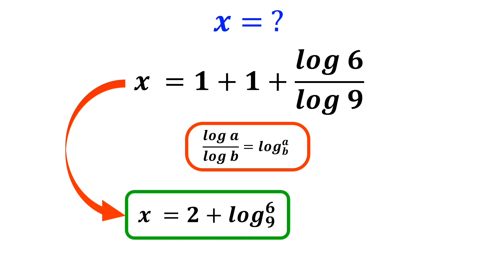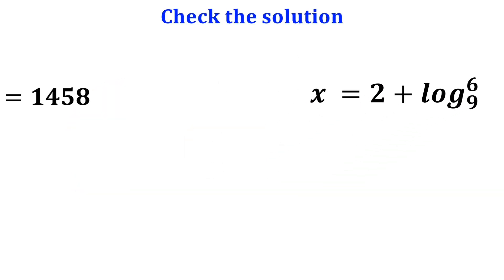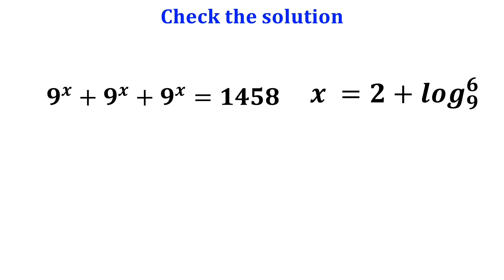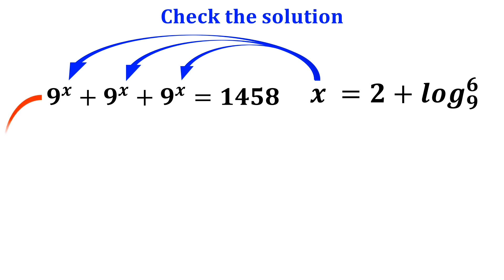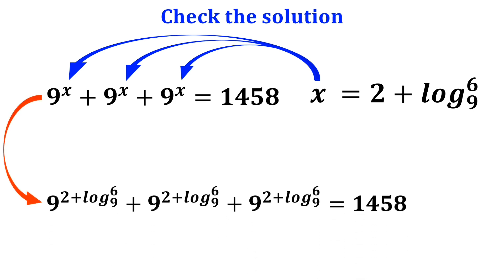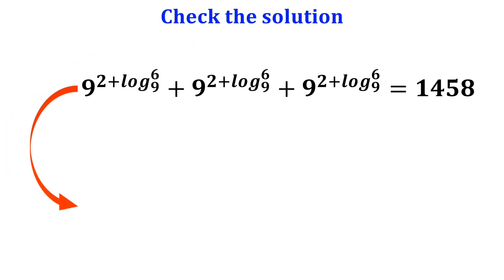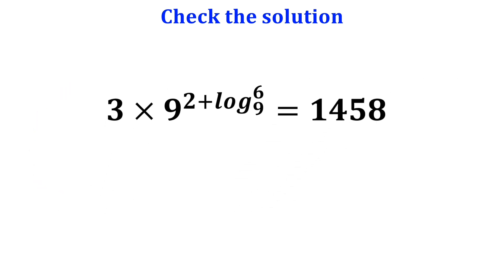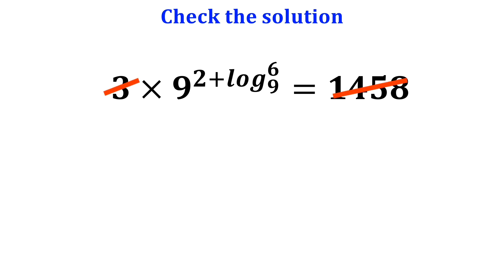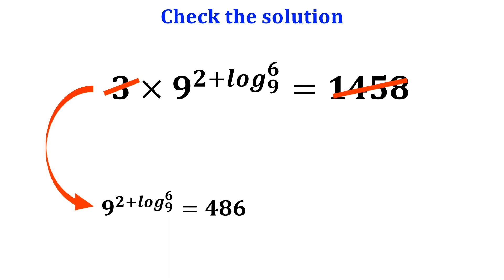Now let's check to see if the solution we found is correct. The original equation was 9 to the power of x plus 9 to the power of x plus 9 to the power of x equals 1458. We substitute the value of x, so it becomes 3 times 9 to the power of (2 plus log of 6 with base 9) which equals 1458. Dividing both sides by 3, this expression becomes 9 to the power of (2 plus log of 6 with base 9) equals 486.